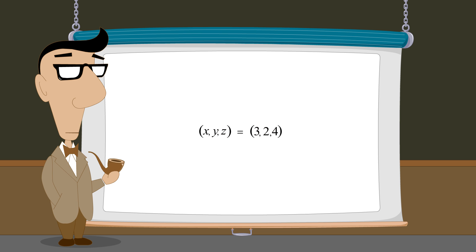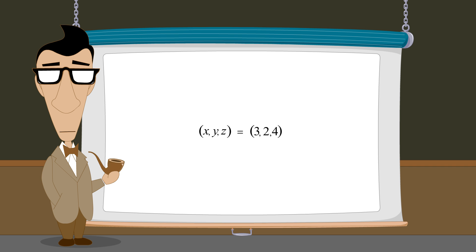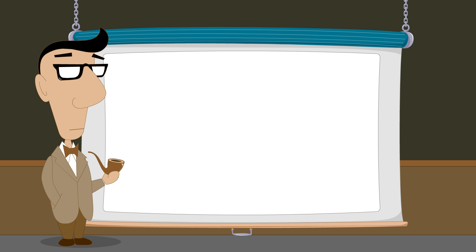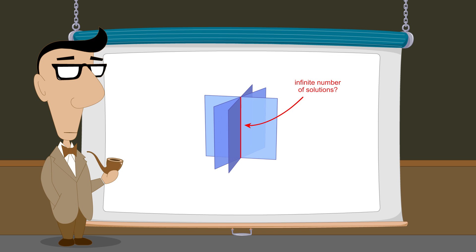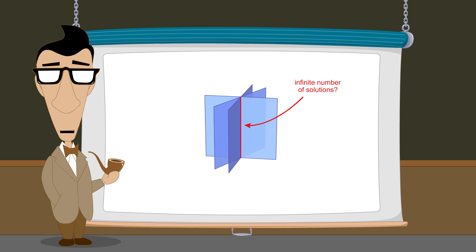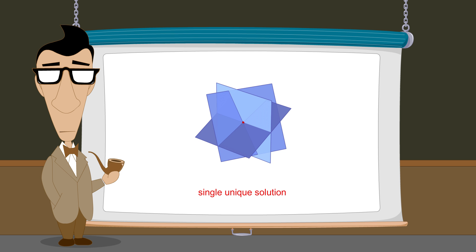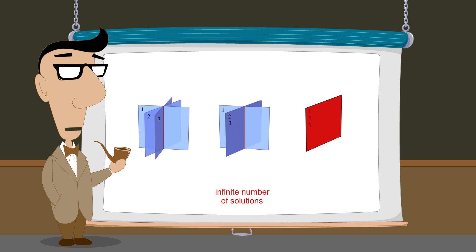In this lecture, we have seen how to solve a system of three equations in three variables which has a single unique solution. However, we have not said how we know that this solution is unique. Perhaps these three planes intersect in such a way that there are an infinite number of solutions and this solution is only one of them. In the next lecture, we will see how to determine if a system of three linear equations in three variables has a single unique solution, an infinite number of solutions, or no solutions.